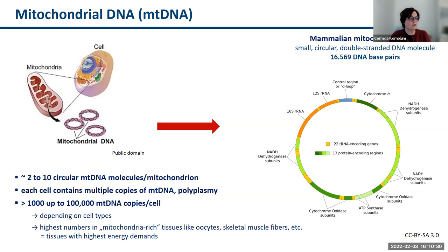The mitochondrial DNA is a small, circular, double-stranded DNA molecule consisting of 16,569 base pairs. There are up to 10 circular mitochondrial DNA molecules per mitochondrion, meaning each cell contains multiple copies of mitochondrial DNA — called polyplasmy. Depending on the number of mitochondria in cells, there may be up to 100,000 mitochondrial DNA copies per cell. This depends on cell types, with highest numbers in mitochondrial-rich tissues like oocytes, skeletal muscle fibers, and brain — tissues with highest energy demands.